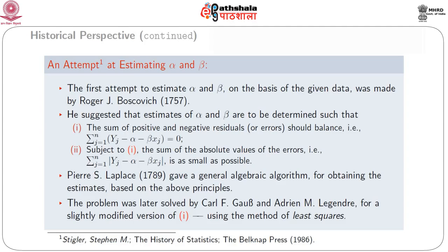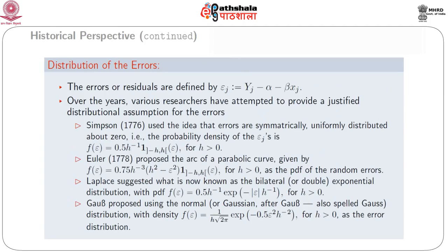The problem was later solved by Gauss and Legendre for a slightly modified version using the method of least squares. For reference, you may go through the book by Stigler, titled 'The History of Statistics.' The errors or residuals are defined by epsilon_j equals y_j minus alpha minus beta times x_j.